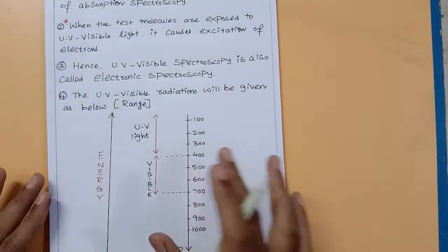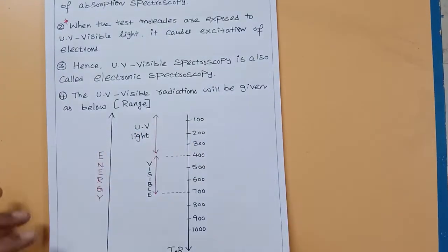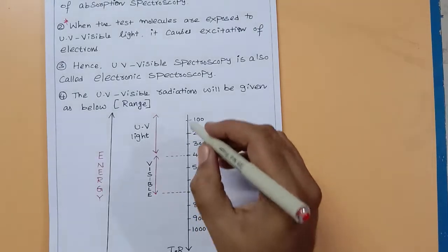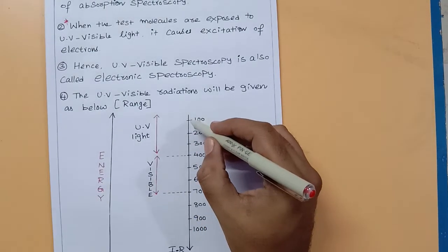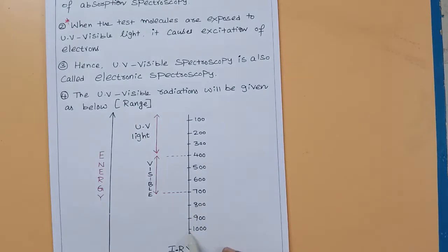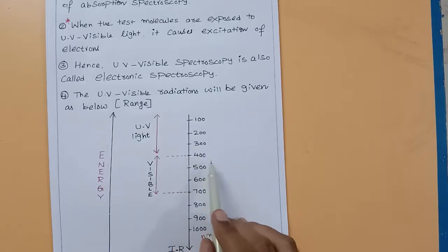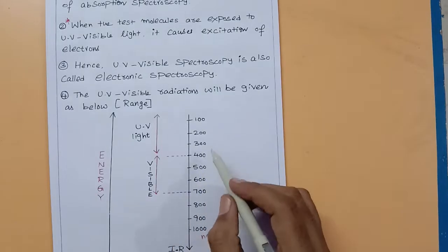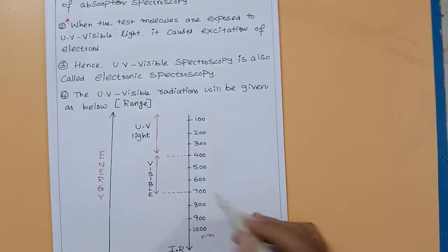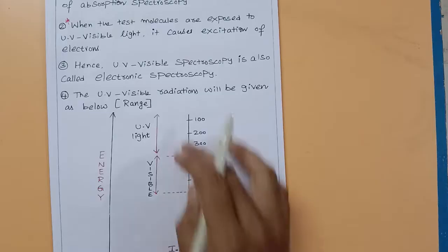Let us see the range of UV-visible radiation. The UV-visible range lies between 100 to 1000 nanometers. Visible light is present between 400 to 700 nanometers. That is the range of UV-visible radiation.